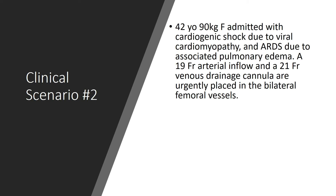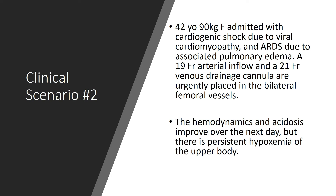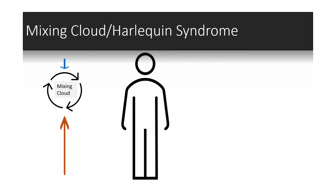Our second clinical scenario involves a 42-year-old female who presented with respiratory distress due to a viral cardiomyopathy with pulmonary edema causing both cardiogenic shock and respiratory failure. This previously healthy female is acidotic and failing conservative therapies to manage her dual organ system failure. She is urgently cannulated in the bilateral femoral vessels with a 19 French arterial cannula with a distal perfusion catheter and a 21 French cannula for venous drainage. Over the next 24 hours, her acidosis and hemodynamics improve, but there is persistent hypoxemia of the upper body.